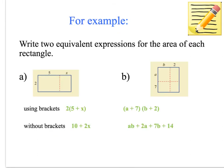When you need to write two equivalent expressions for the area of each rectangle, you need to write one using brackets and one without brackets. So I've done this for you here. You have 2 times (5 + x). Using brackets is 2(5 + x). Without brackets, 2 times 5 is 10 and 2 times x is 2x, giving 10 + 2x.